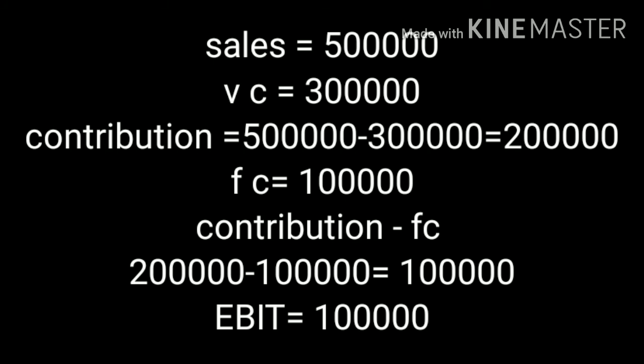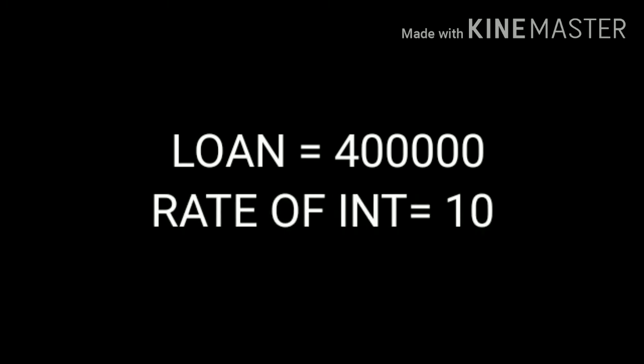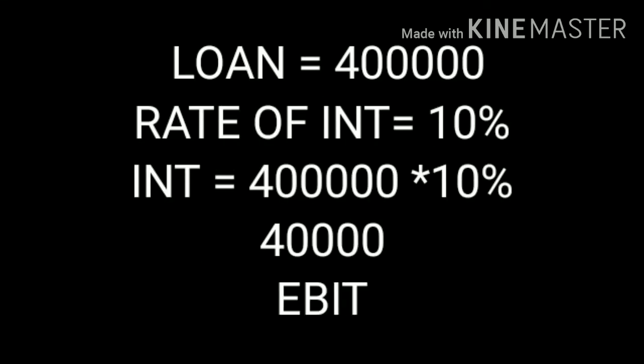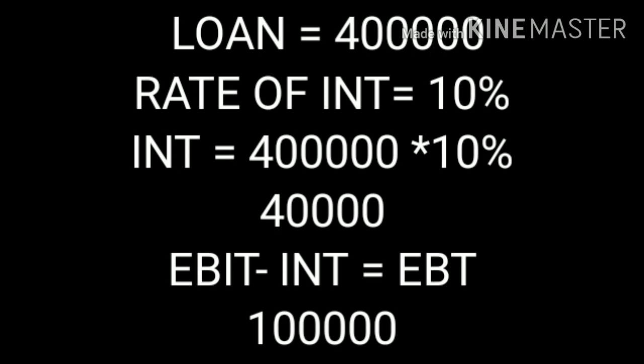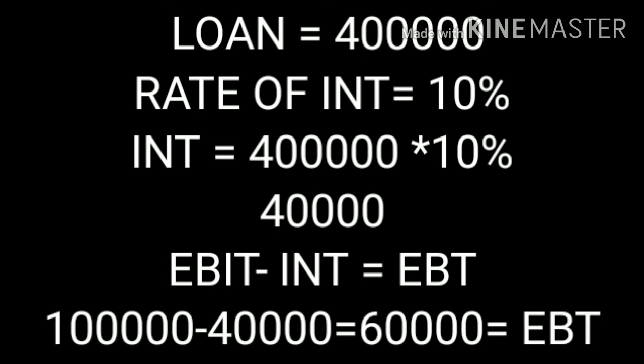Next is EBT — earnings before tax. EBT is equal to EBIT minus interest. Interest means interest on debt capital. Long-term loan is 4 lakh and rate of interest is 10%, so 4 lakh into 10 by 100 equals 40,000 interest. EBT is equal to EBIT minus interest: 1 lakh minus 40,000 equals 60,000.